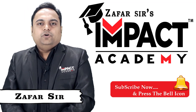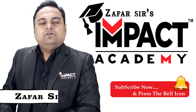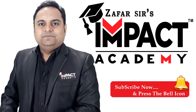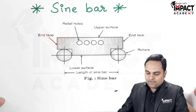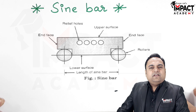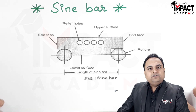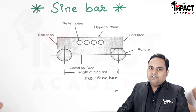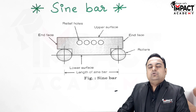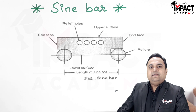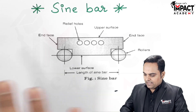In this video I will be explaining the sine bar. A sine bar is an instrument which is used to check the flatness of a particular surface. With the help of a sine bar, an angle can also be adjusted.